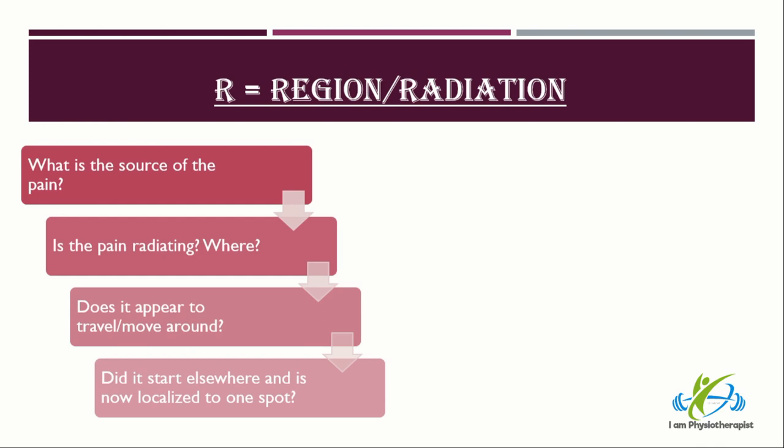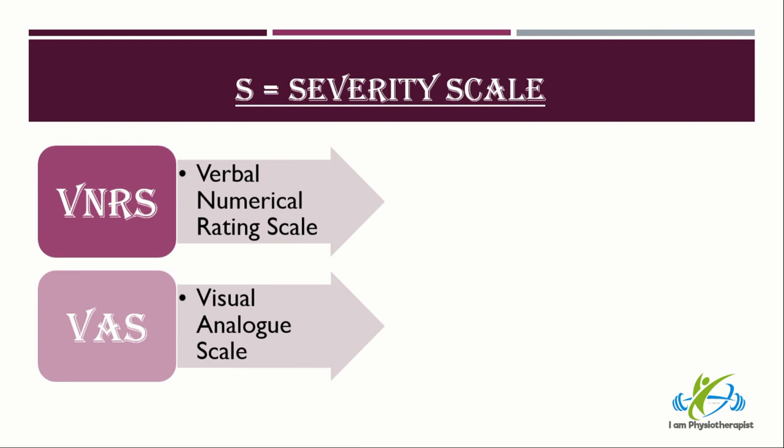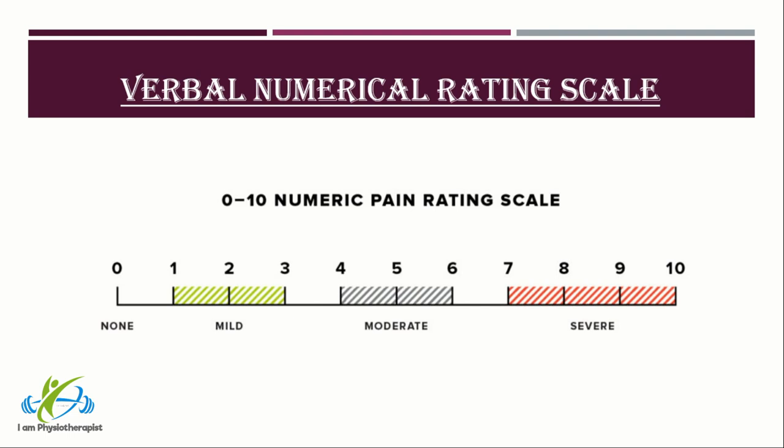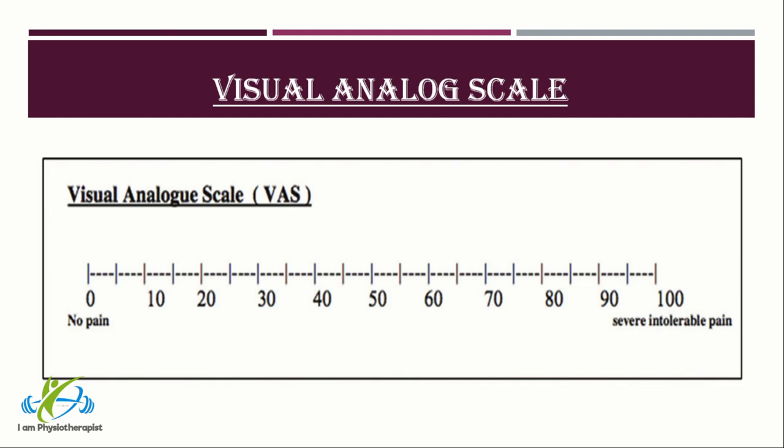For Region, ask: Does the pain appear to travel or move around? Did it start elsewhere and is now localized to one spot? S stands for Severity. The two most widely used methods to measure pain are the Verbal Numerical Rating Scale and the Visual Analogue Scale. The Verbal Numerical Rating Scale is a common 0-to-10 scale, with 0 being no pain and 10 being the worst, horrible pain requiring emergency treatment. The Visual Analogue Scale is a validated subjective measure recorded by making a handwritten mark on a 10 cm line representing a continuum between no pain and worst pain.